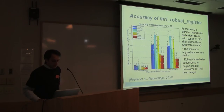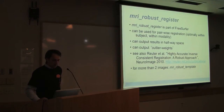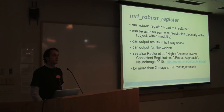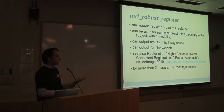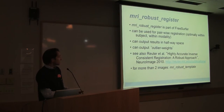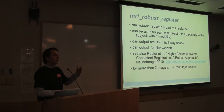This registration is part of the FreeSurfer package, called MRIrobustRegister, and you can use it independently without running the full longitudinal stream. If you have two images you want to register into a mid-space in an unbiased fashion, you can call this command. You can also compute outlier weights — the yellow overlay — to find changes between those images.